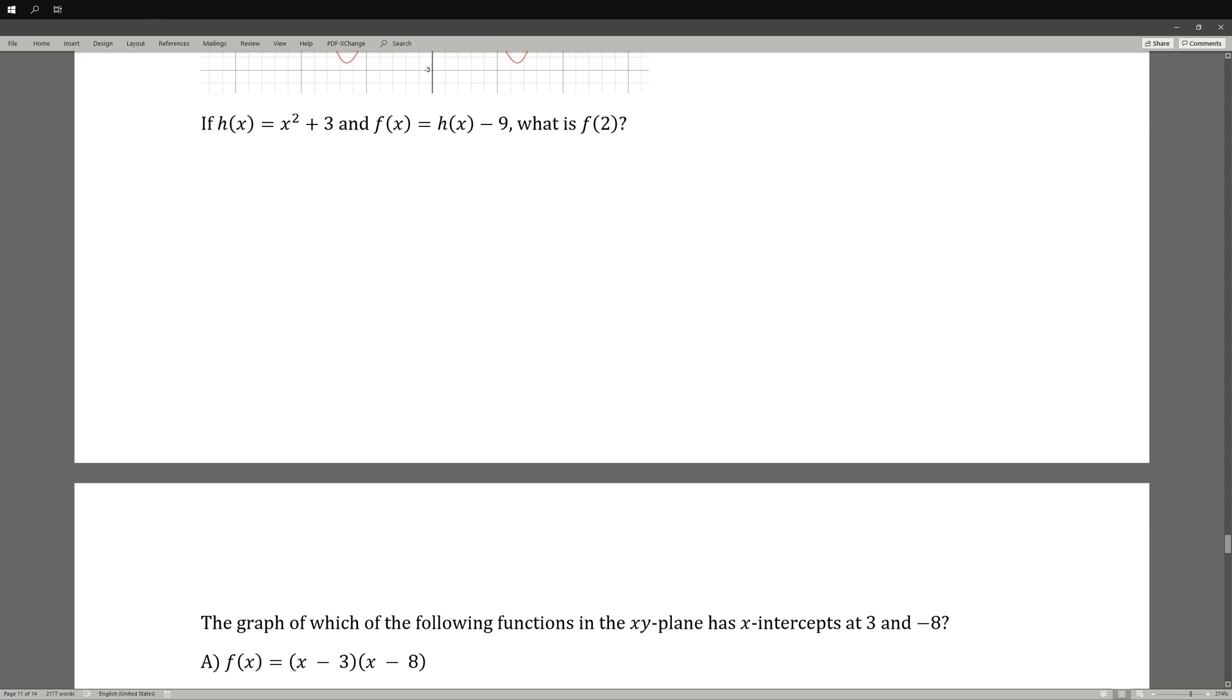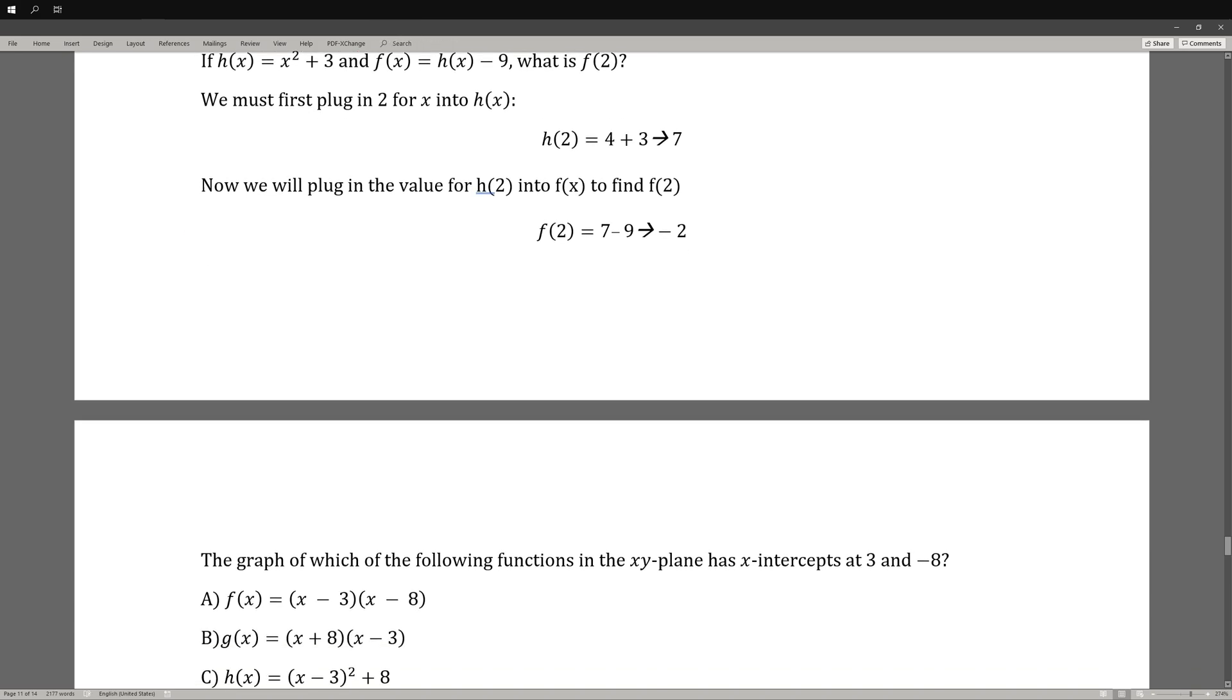If h(x) = x^2 + 3 and f(x) = h(x - 9), what is f(2)? The first thing that we would do here is we need to find h(2) because f(2) depends on h(2). And we get 7. Now we plug h(2) into f(x) in order to find f(2). So we get 7 minus 9, and that's equal to negative 2. That will be our final answer.